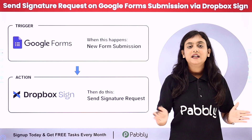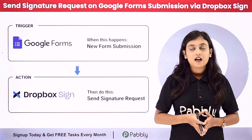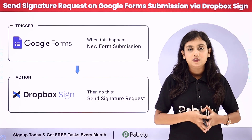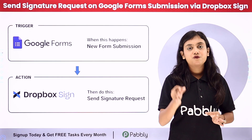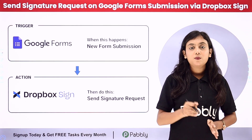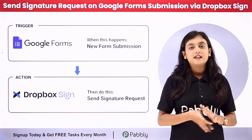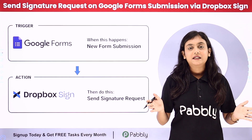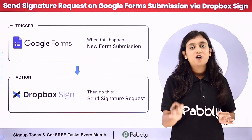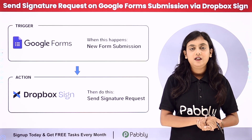I manage the hiring process in a company. When employees are selected after their interview, they are asked to fill a form created with Google Forms. As they fill the form, we want to automatically send them documents to sign. Doing all of this manually takes a lot of time, so I created an automation using Pabbly Connect, an amazing automation and integration software that requires no programming or coding skills.